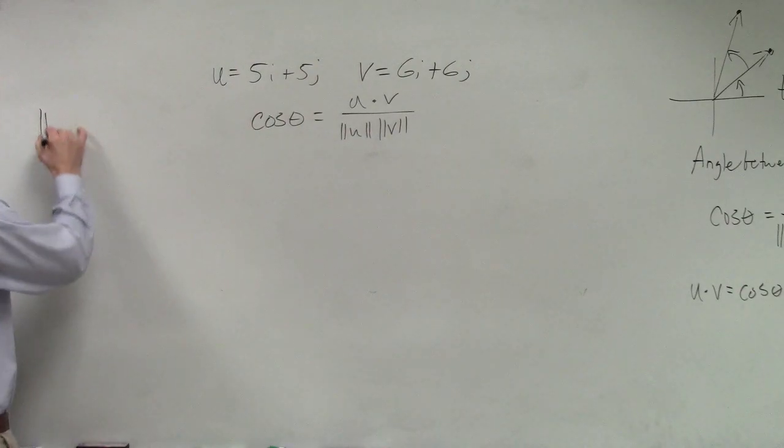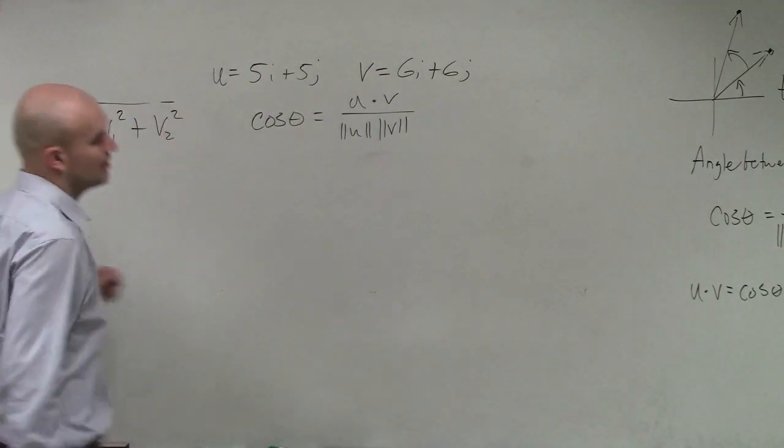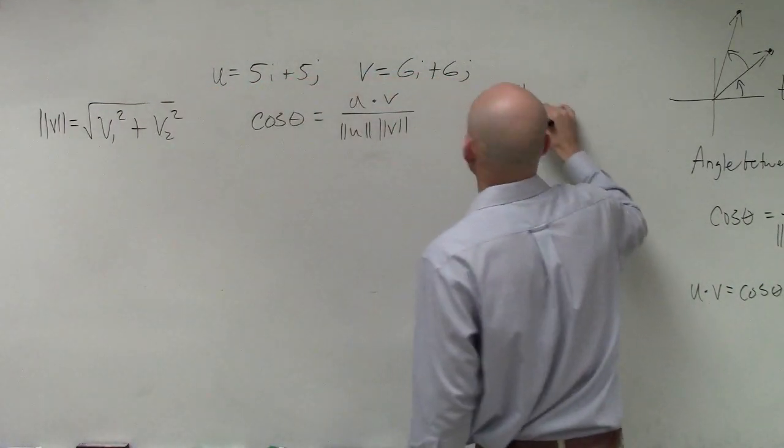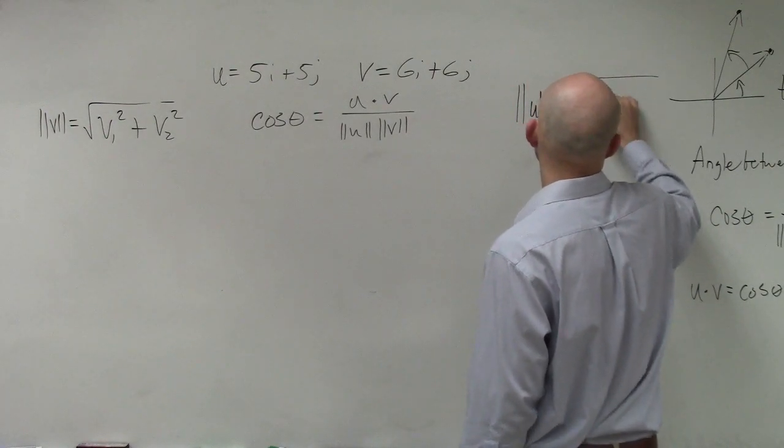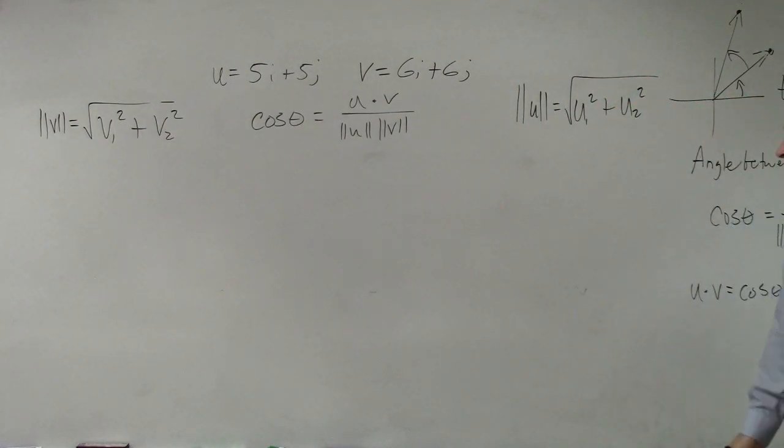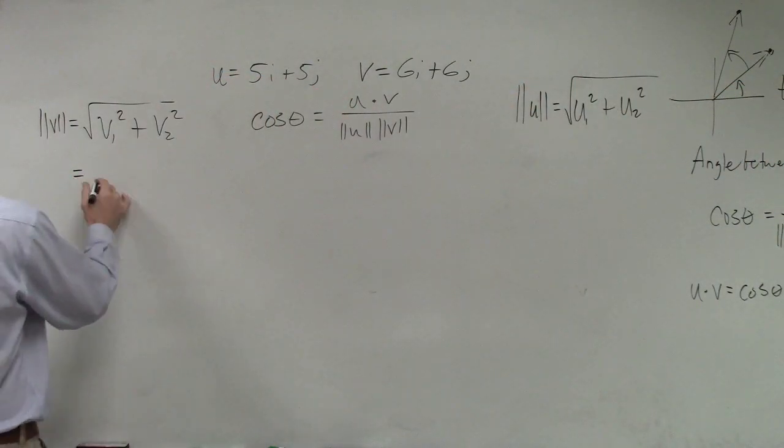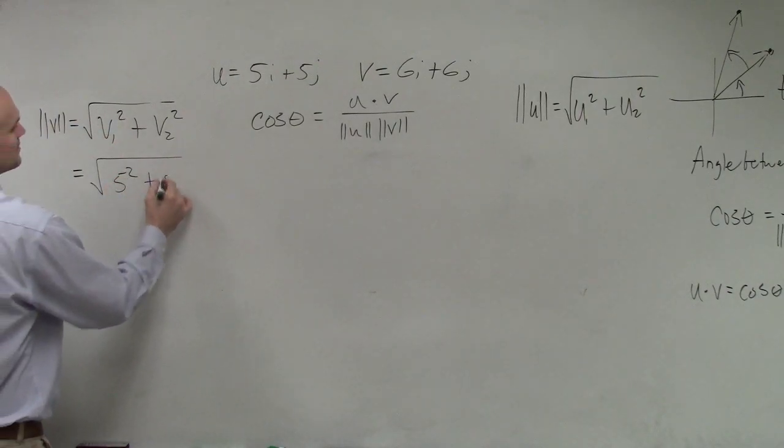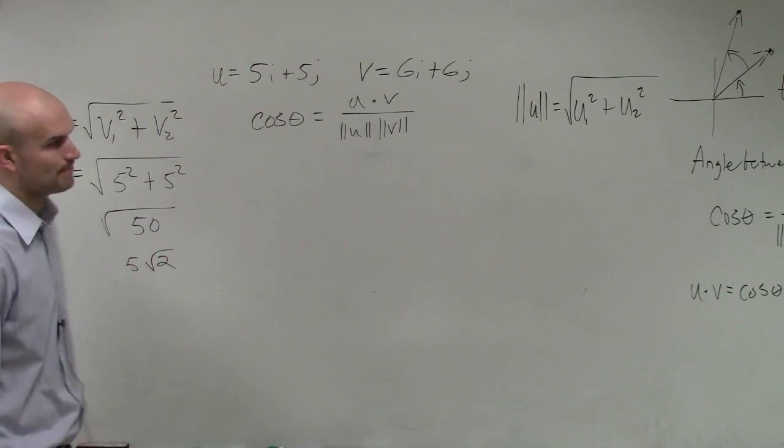We know we have to find the magnitude. So let's do the magnitude of v equals the square root of v1 squared plus v2 squared. And the magnitude of u equals the square root of u1 squared plus u2 squared. Definition of magnitude. We've got to make sure we know those and go through it. So here, this is going to equal square root of 5 squared plus 5 squared. 25 plus 25 is the square root of 50, which I can reduce to 5 radical 2.